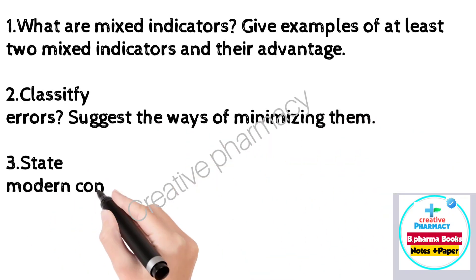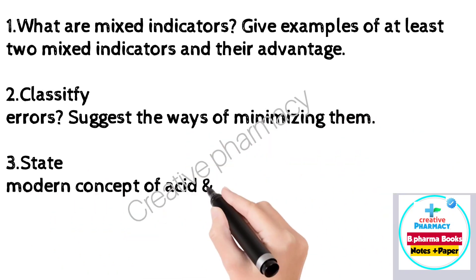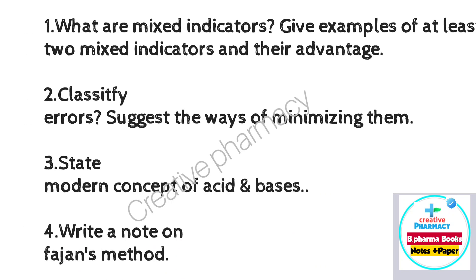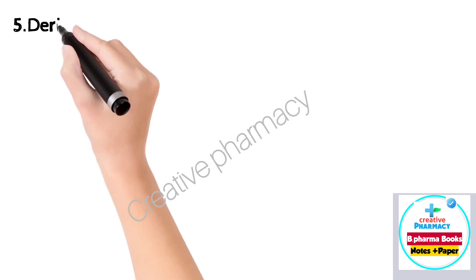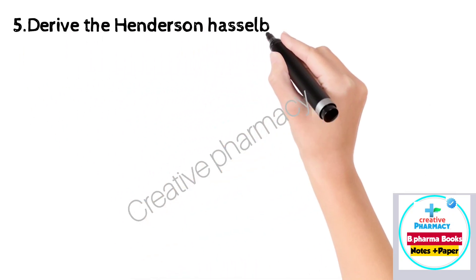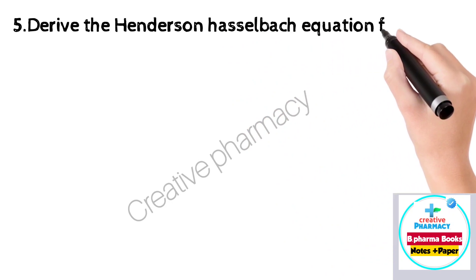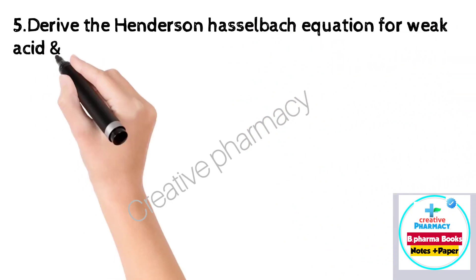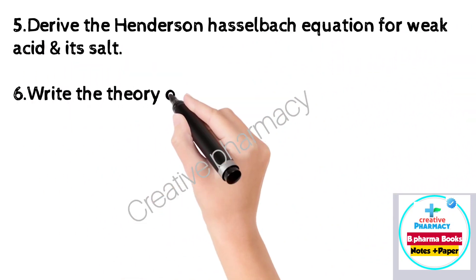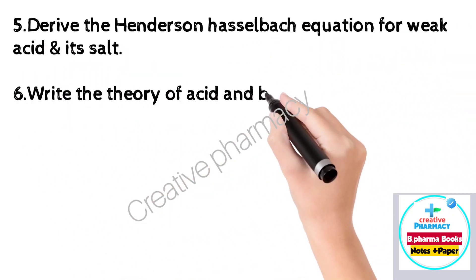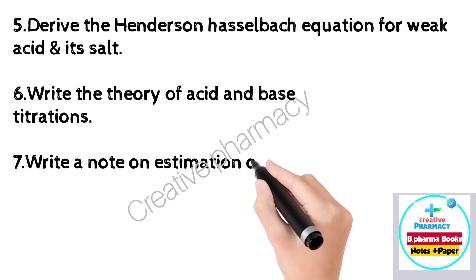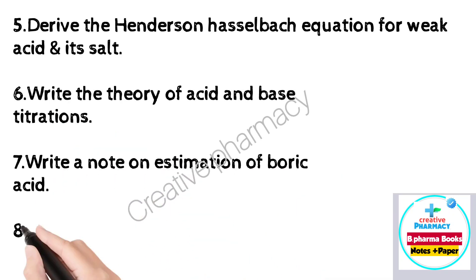Aap in sare questions ke 2-3 page ke answer likhe point mein. Question 4: Write a note on Fudgeon's method. Question 5: Derive the Henderson-Hasselbalch equation for weak acid or its salt. Question 6: Write the theory of acid and base titrations. Question 7: Write a note on estimation of boric acid.